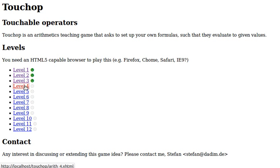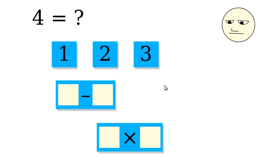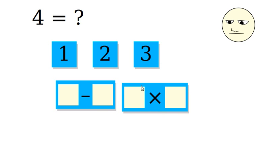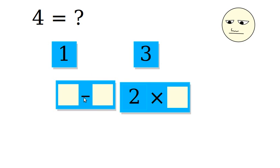Okay, let's go to level 4. In level 4, we have to build the number 4 from 1, 2, 3, minus, and times. Well, we can do 2 times 3 minus 1.